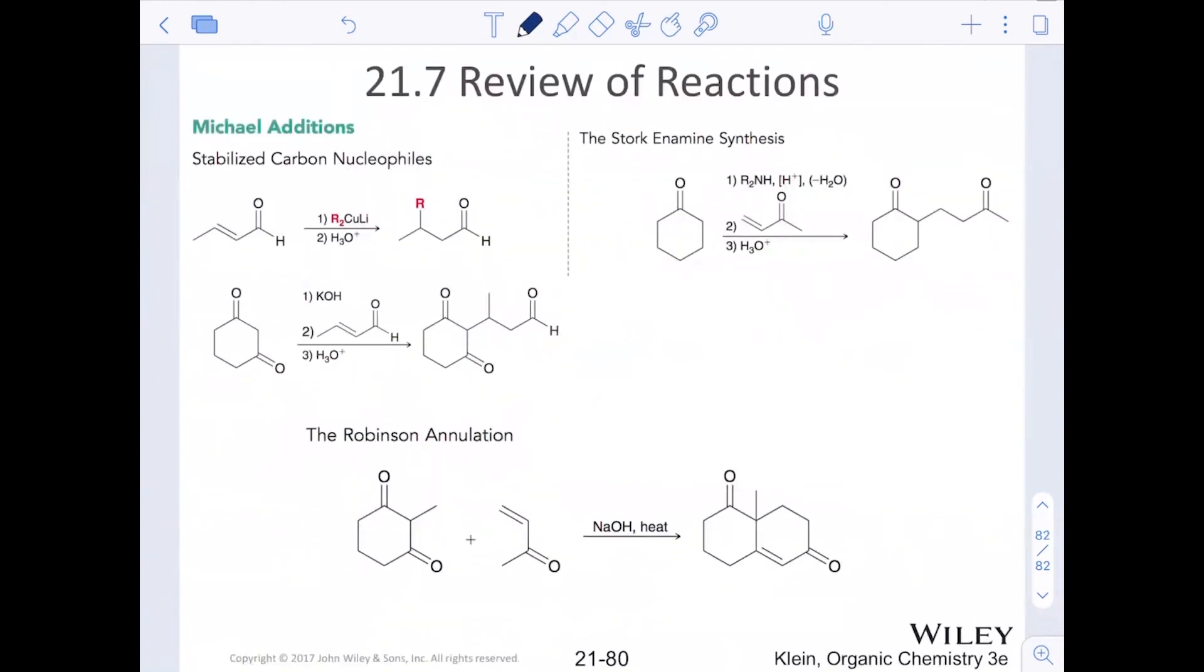And then finally, Michael additions. When we saw stabilized carbon nucleophiles can undergo Michael addition, the Stork-enamine synthesis was our workaround if we didn't have stabilized Michael donors. And then the Robinson annulation was like the epitome of everything in chapter 21. It is a truly amazing reaction, the Robinson annulation, where it combines Michael addition and an intramolecular aldol.